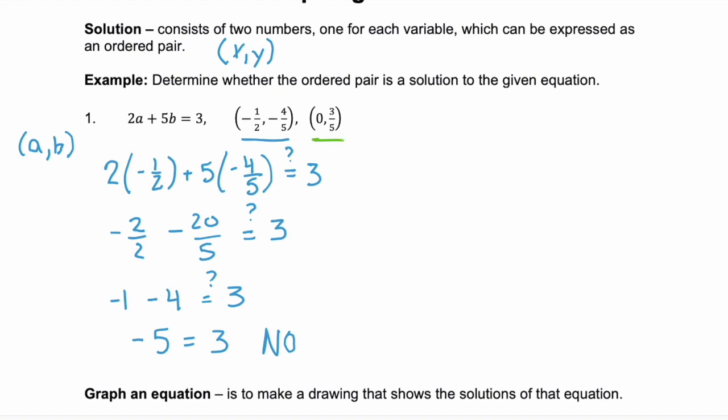How about the second ordered pair? We're going to do the same thing. So we have two times zero plus five times three-fifths. And we're checking if that equals three. Two times zero is zero. Five times three-fifths is fifteen-fifths. And does that equal three?